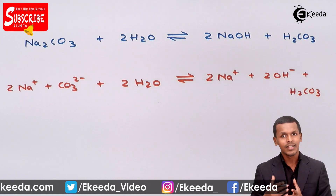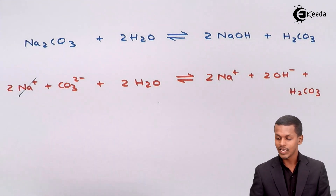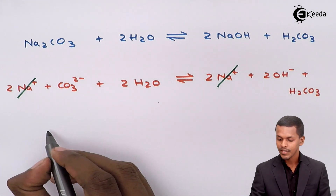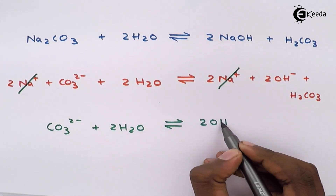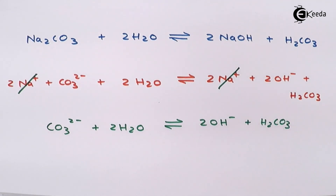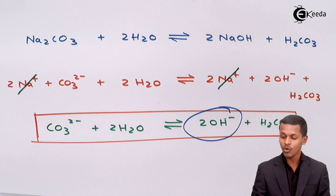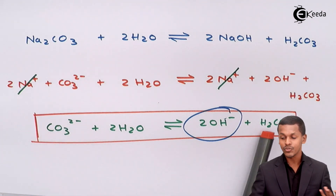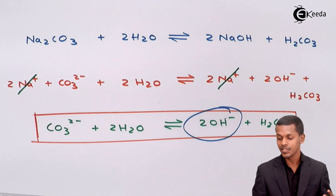Since H₂CO₃ is a weak acid, dissociation is limited. The Na⁺ ions on both sides cancel out as equilibrium is maintained. What remains is CO₃²⁻ along with 2 moles of H₂O, which reacts to give 2 moles of OH⁻ along with H₂CO₃. The H⁺ ions of the water molecule are utilized to react with CO₃²⁻ to form carbonic acid H₂CO₃.